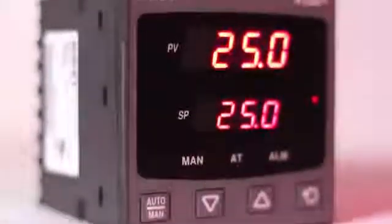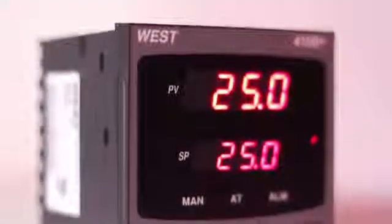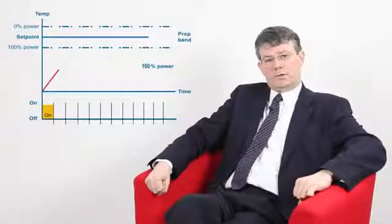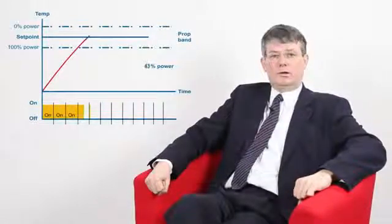Many users are confused by the fact that proportional control can be used with relays or solenoid valves, devices that can only ever be on or off. How is this possible? It's certainly the case that these devices can only ever be on or off, but they can be on or off for part of the time. For example, being on for 50% of the time equates to 50% of power.